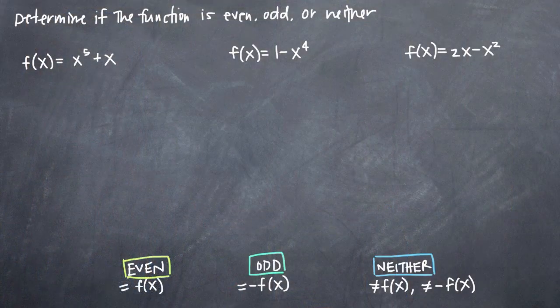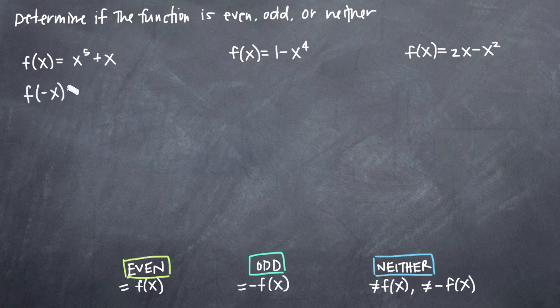In this particular problem, we've been given three separate functions and asked to determine whether each one is an even function, an odd function, or neither. To make this determination, in each case, we'll plug in negative x in place of x to our functions, simplify, and then the result will tell us whether the function is even, odd, or neither. Let's go ahead and plug in negative x to our first function.